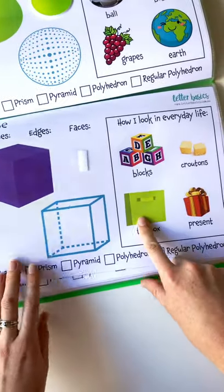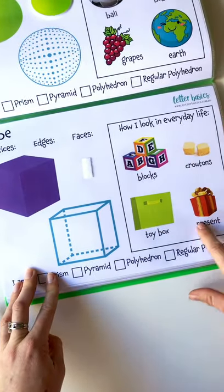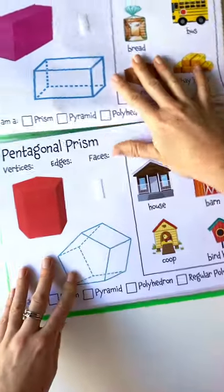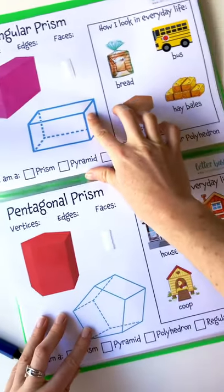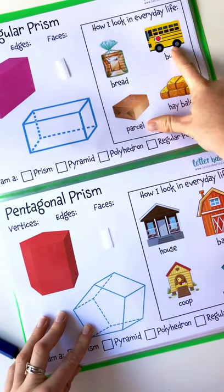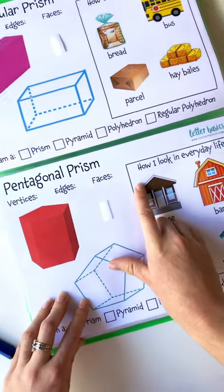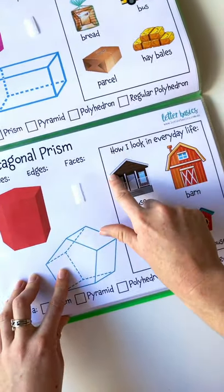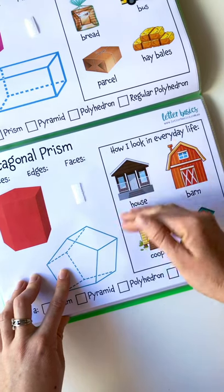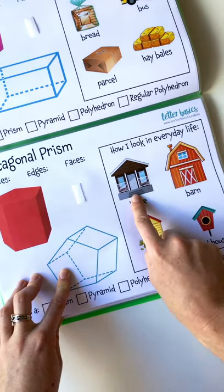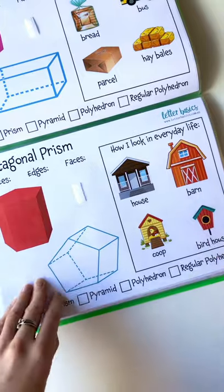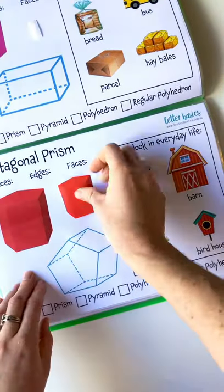Rectangular prism, you can see it in bread, a bus, a parcel, or hay bales. Pentagonal prism, this was a bit tricky as far as pictures go, but you get the overall shape and it's 3D in a house, barn, coop, and birdhouse. They're all fairly house-shaped, those ones.